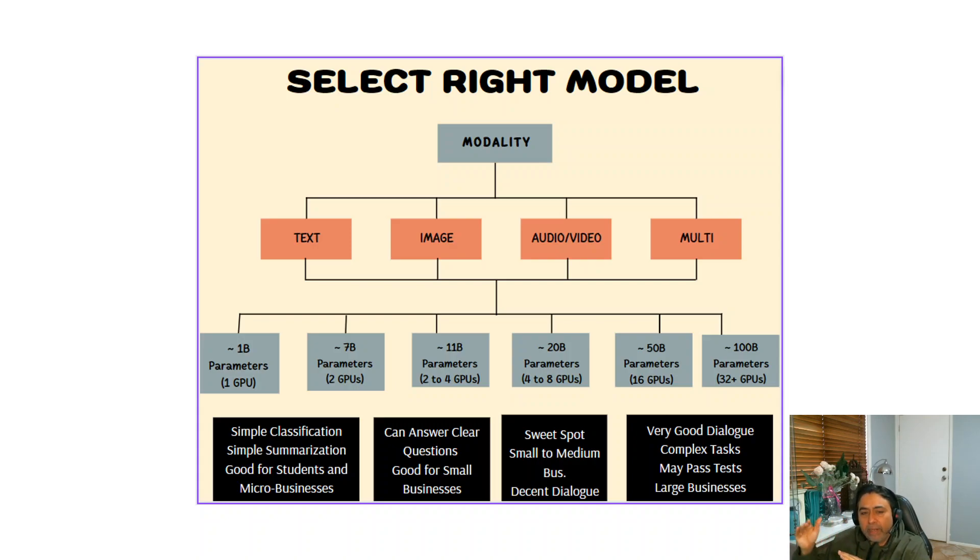Now from 11 billion parameter models, things start getting interesting. This requires around 2 to 4 GPUs or accelerators, and this model is more advanced because it can give more clear answers. It could even summarize a text, translate simple languages, and even generate simple images from simple text or even small videos for a few seconds. These models might be useful for small and relatively large businesses.